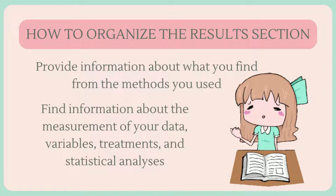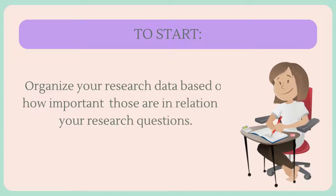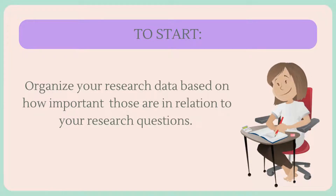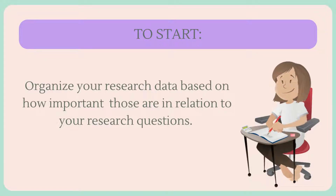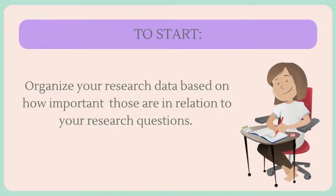Since your results follow your methods section, you'll provide information about what you found from the methods you used, such as your research data. You may also include information about the measurement of your data, variables, treatments, and statistical analysis. Organize your research data based on how important those are in relation to your research questions. This section should focus on showing important results that support or reject your research hypothesis. Include your list of important data as supplemental materials when submitting to the journal.